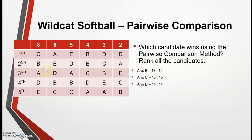For A versus D: in column 1 A is over D, so A gets 8. A is over D in column 2, so A gets 6 more. D is over A in columns 3, 4, 5, and 6 — giving D 5, 4, 3, and 2 votes respectively. So a total of 14 votes for A and 14 votes for D — that's a tie. In that case, we award half a point to each candidate.